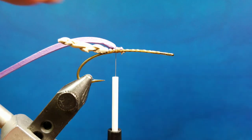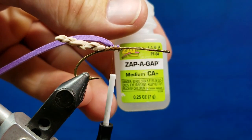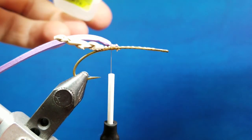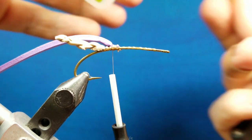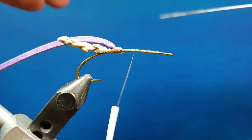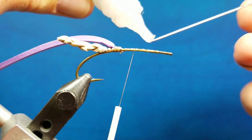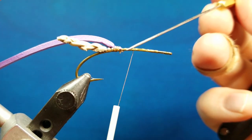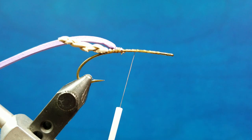One of the most important things is this stuff right here: zap-a-gap. Anytime I'm going to create a pattern and attach foam to the shank of a hook, I always want to put down a little bit of zap-a-gap right on the hook shank and that helps to bond and anchor that material down.